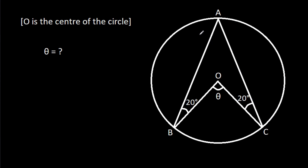In this video, we have been given a circle in which angle ABO is 20 degrees, angle ACO is 20 degrees, and angle BOC is theta. We have to find theta.